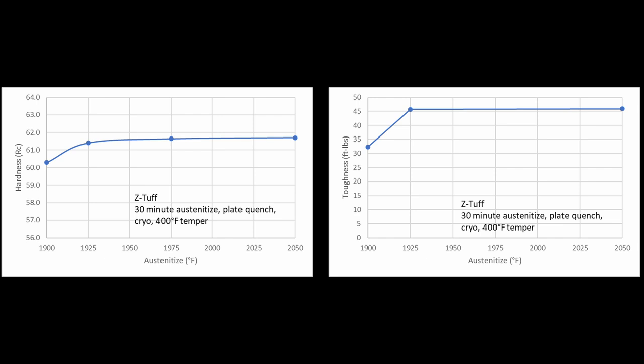If you austenitize a little lower, can you get a little more toughness? If you austenitize higher, can you get a little bit higher hardness? But what we learned was that from 1925 to 2050, the hardness and toughness was basically flat. So in that way, it is relatively insensitive to heat-treating. You can do a pretty wide range and still get great properties.